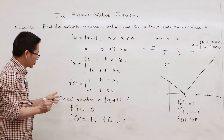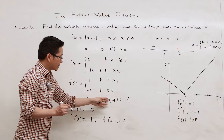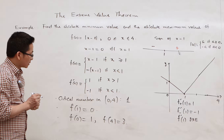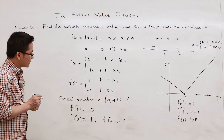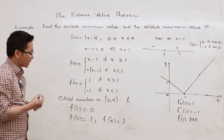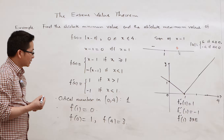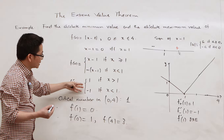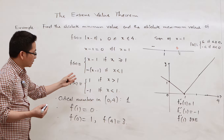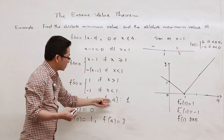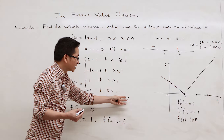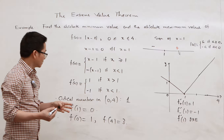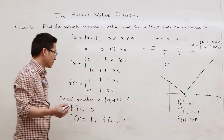Now we are ready to find all critical numbers of the function in the interval [0, 4]. We are looking for points at which the derivative is 0 or does not exist. We cannot find any number at which the derivative is 0. However, we can find a number in [0, 4] at which the derivative doesn't exist — that is x = 1. So x = 1 is a critical number in this interval.